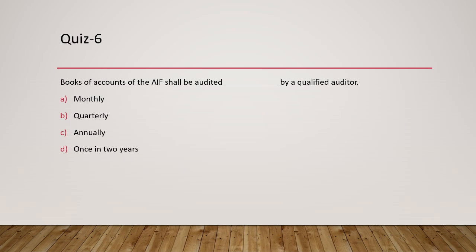Question six: books of accounts of AIFs shall be audited at what frequency — quarterly, monthly, or once in two years? The answer is none of those; it is done annually. This type of question may not come directly in the exam, but it could appear in a case-based scenario as a true or false question, so you need to know the concept.